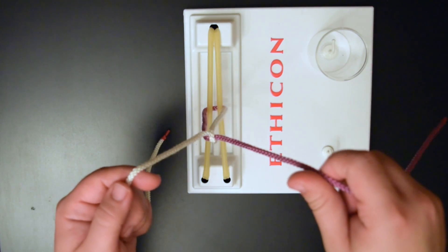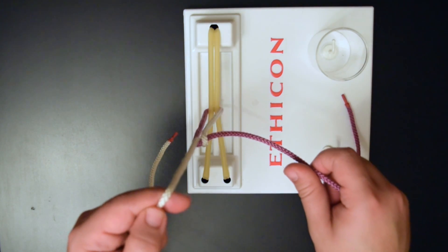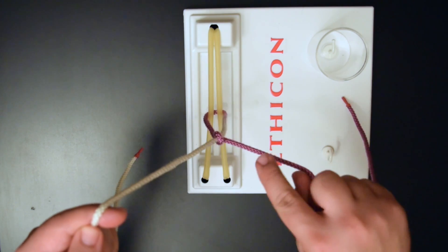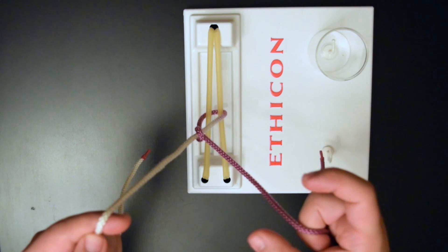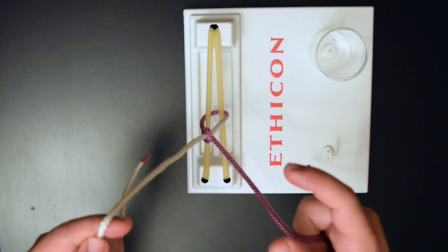And again your left hand is going to raise up and pull straight towards the ceiling. If you notice the suture just flipped over there. Then your next throw is going to utilize your C. Form your C.